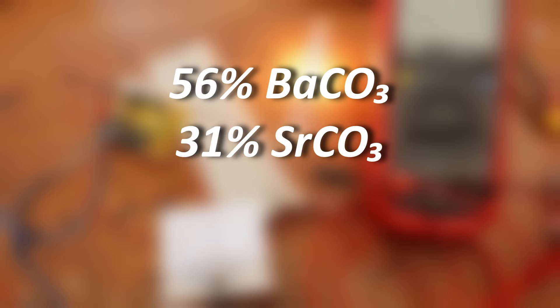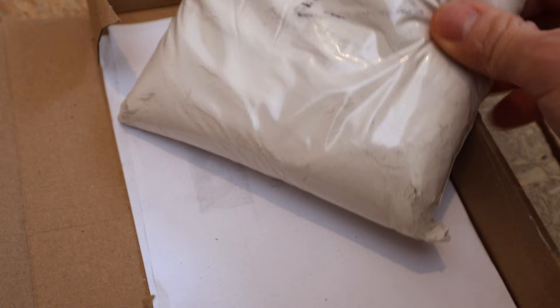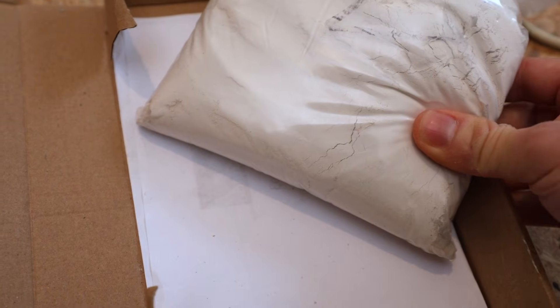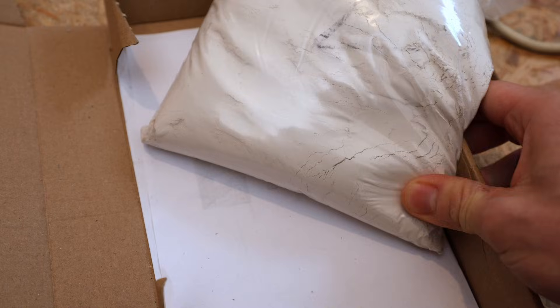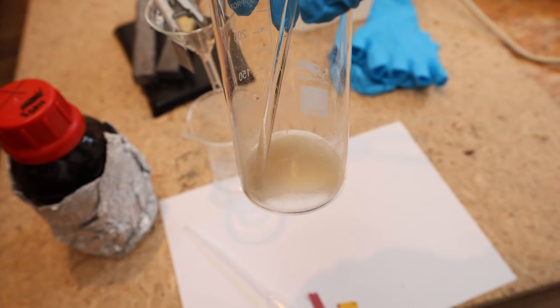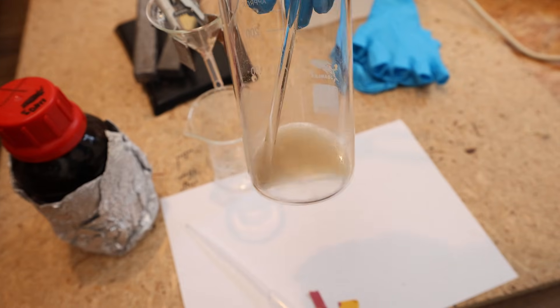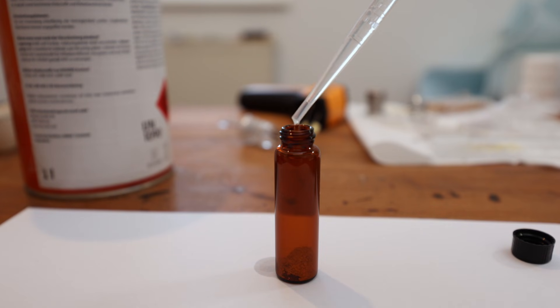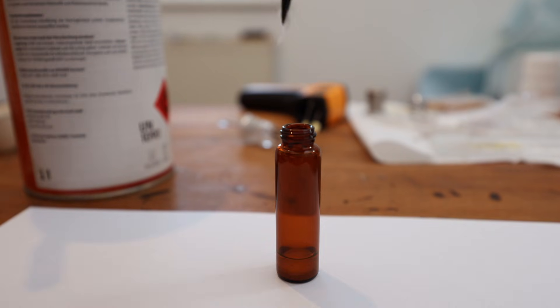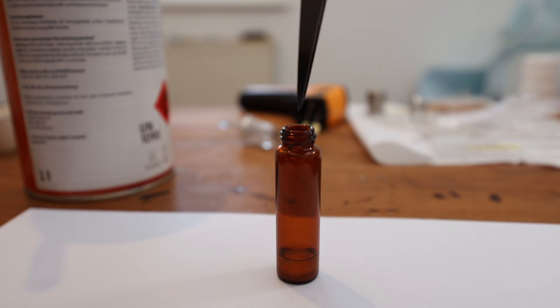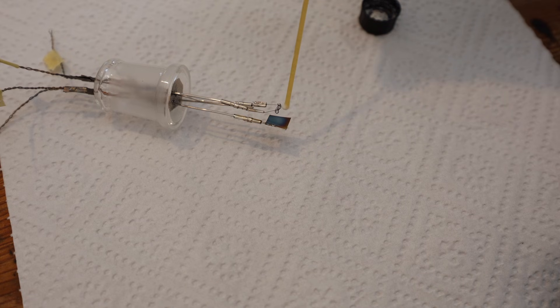Now to the emission coating. For that I mixed up 56% barium carbonate, 31% strontium carbonate and 13% calcium carbonate. Unfortunately I noticed that my calcium carbonate that I ordered about a year ago was not exactly white, which means it's not very pure. So for future vacuum tubes I need to purify the stuff that I have or order some really pure chemicals. Regardless of that, to this mixture is now added some acetone and a little bit of nitrocellulose. And this will make it more like a paint that can be applied to the filament.